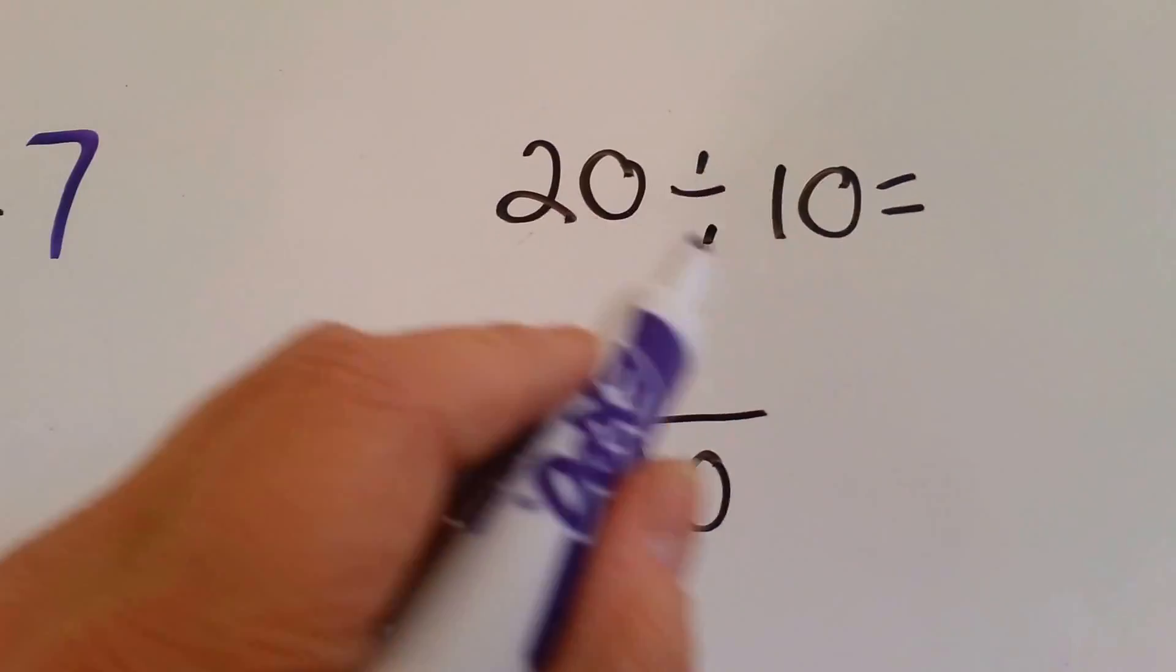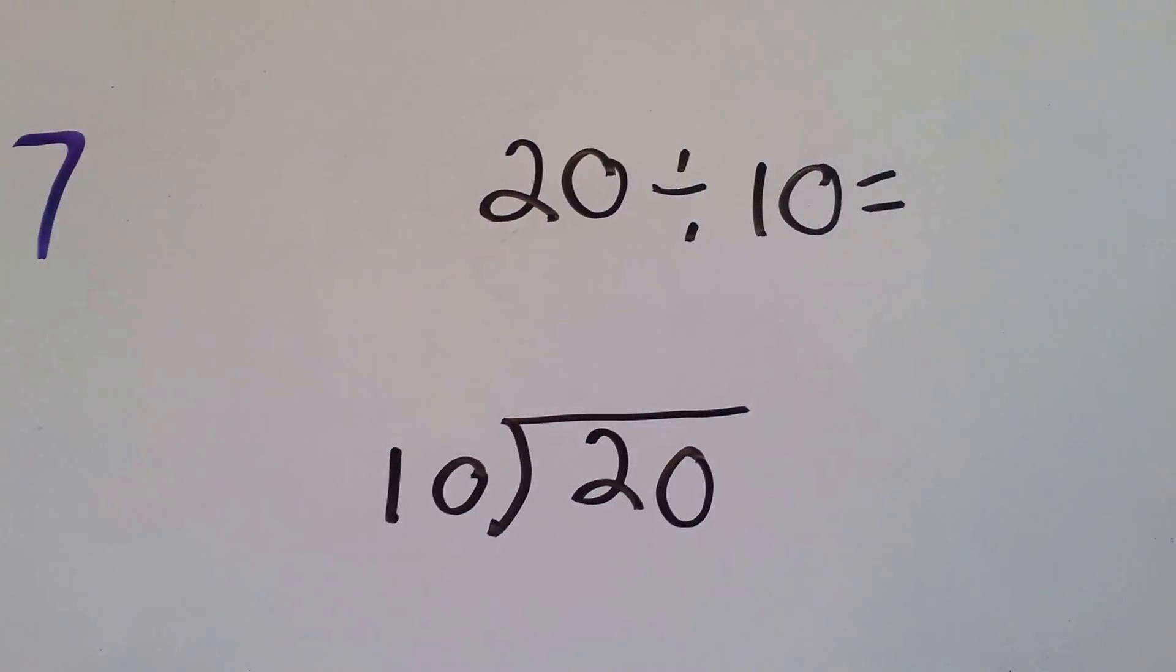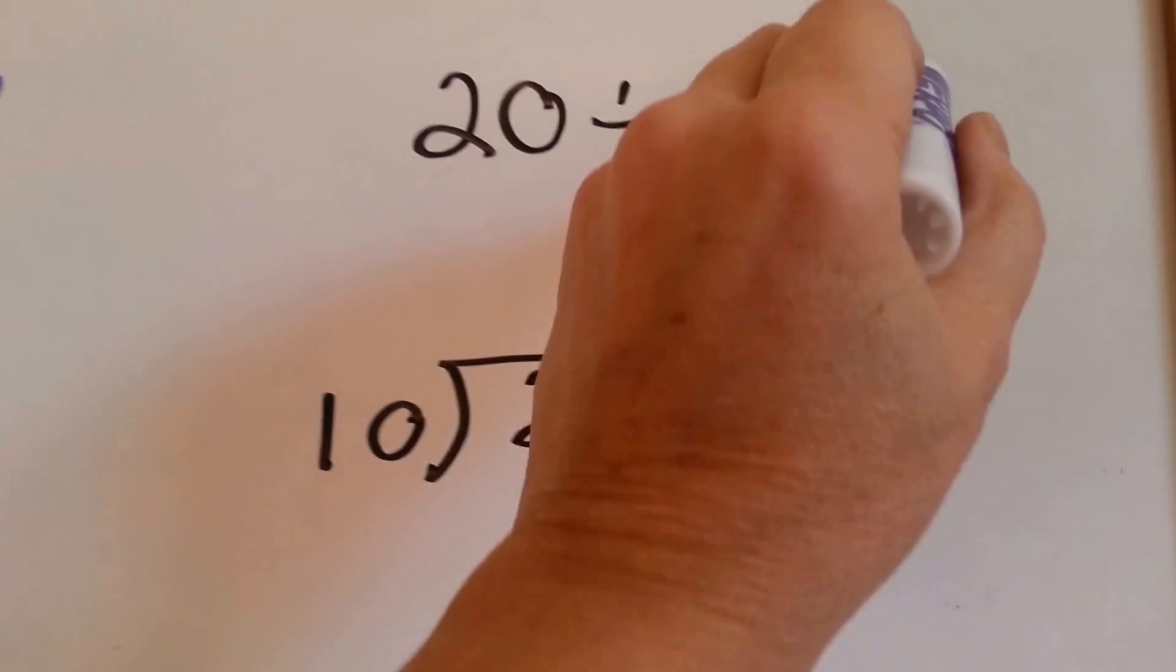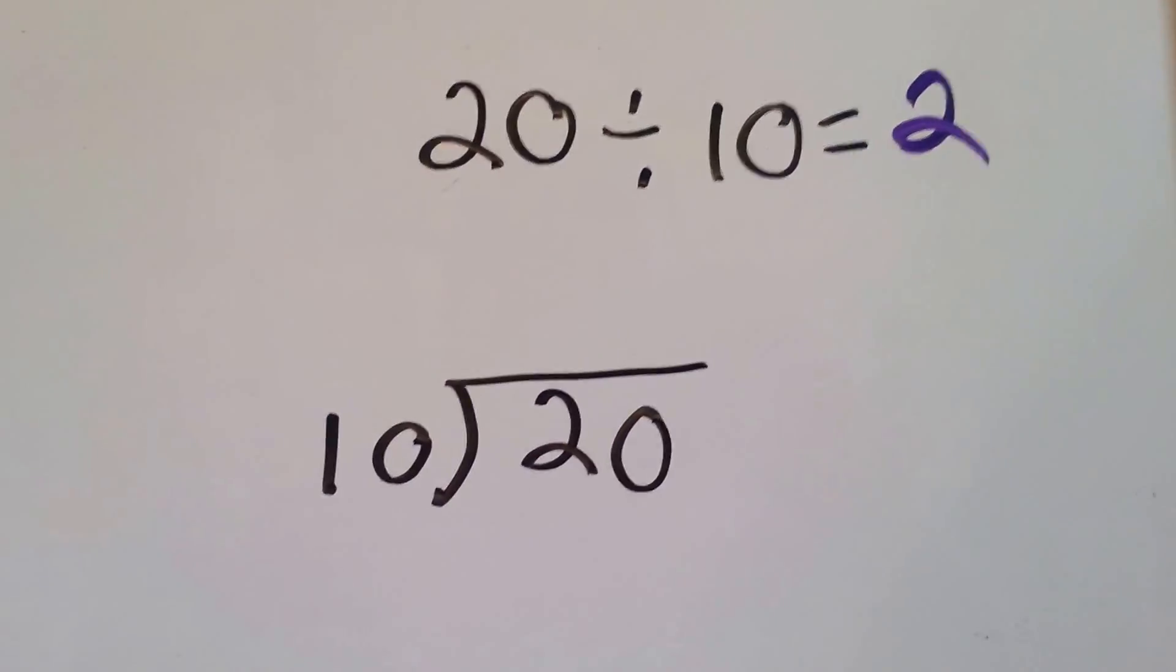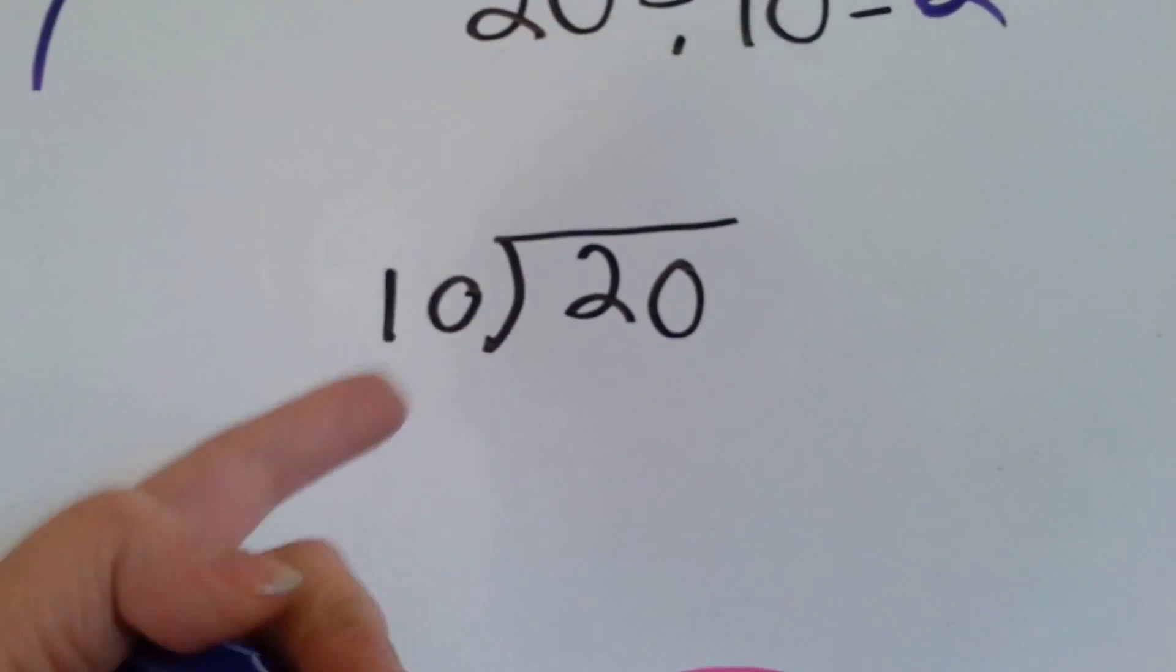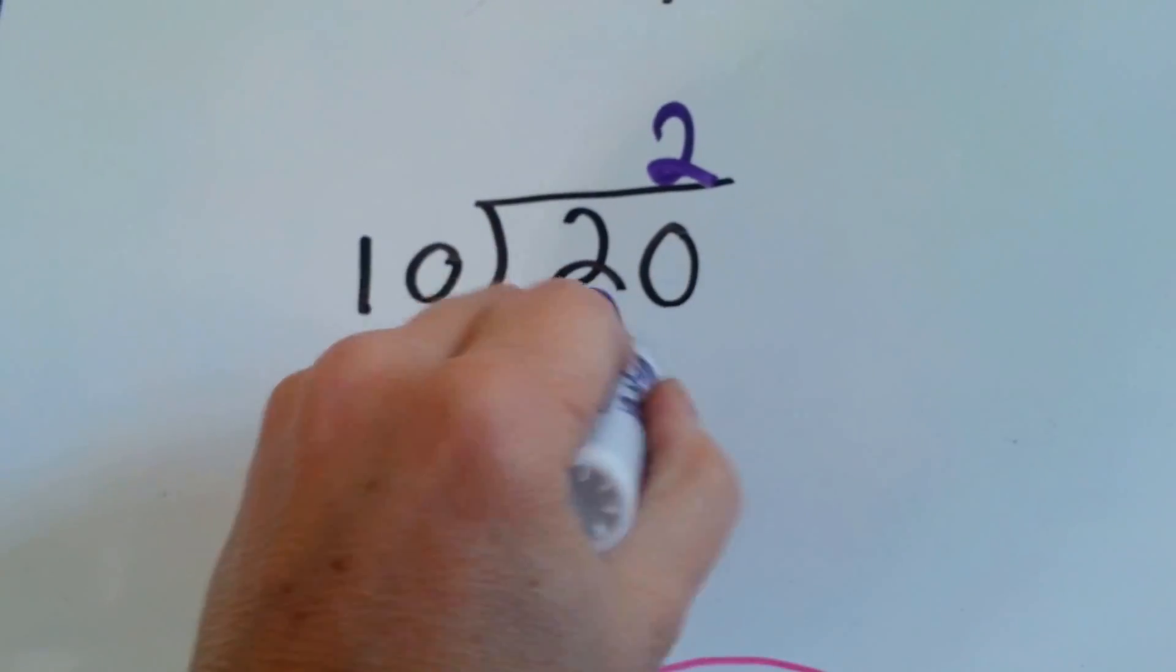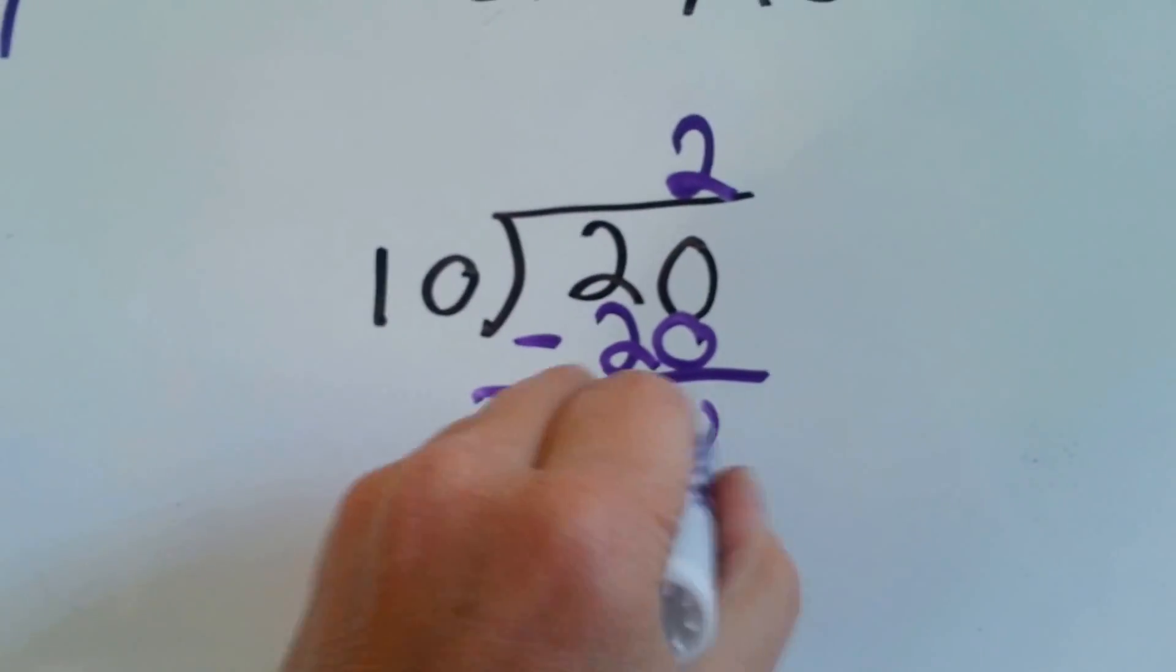20 divided by 10. If you had 20 and you divided it into 10 parts, you would get 2. Because 10 plus 10 is 20. 10 goes into 20. 2 times 10, 20. 10 times 2 is 20. We do our subtraction and get 0.